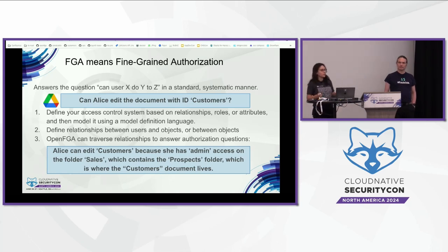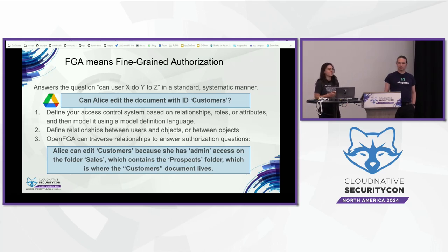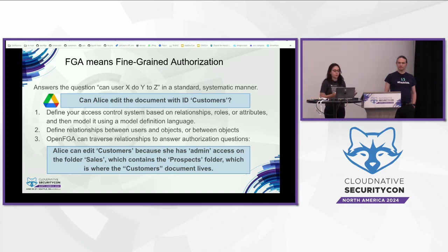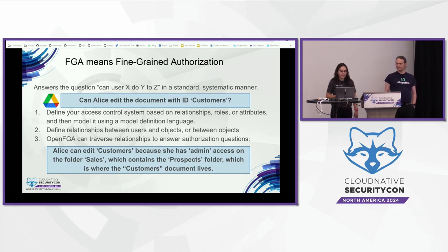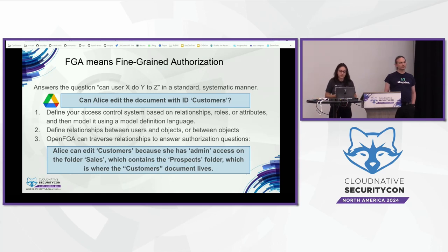Let's say that you're Google Drive and you have users, documents, and folders. The documents live within folders, and you can give permissions to someone to a document, or to a folder, or both. What FGA does is it answers the question: can this user do this action on this resource or object? An example for Google Drive could be: can user Alice edit the document with ID 'customers'?